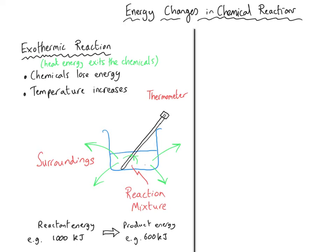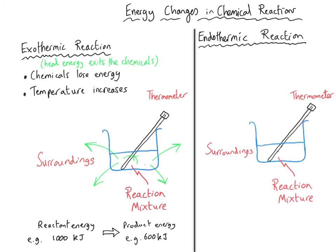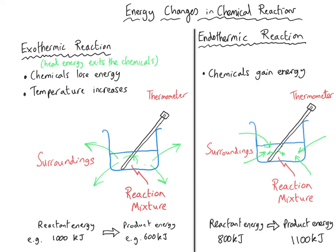Alternatively, we can have a different type of reaction, which is an endothermic reaction. Everything that happens in an endothermic reaction is pretty much the opposite of an exothermic reaction. So this time, for the reaction mixture, we have energy moving into the chemicals from the surroundings, including the thermometer. And so the chemicals themselves have got more energy at the end than they had at the beginning - they have gained energy. And because the thermometer is part of the surroundings that is losing energy to the chemicals, it will record a temperature decrease.